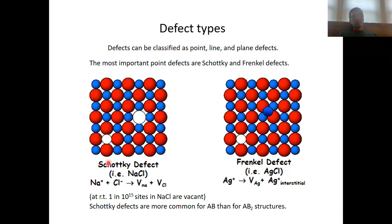What is a Schottky defect? A Schottky defect is a defect in which an ion pair is missing. For instance, when you look at the sodium chloride crystal structure, a Schottky defect exists when a pair of sodium-plus and chloride-minus ions are missing in the crystal structure.